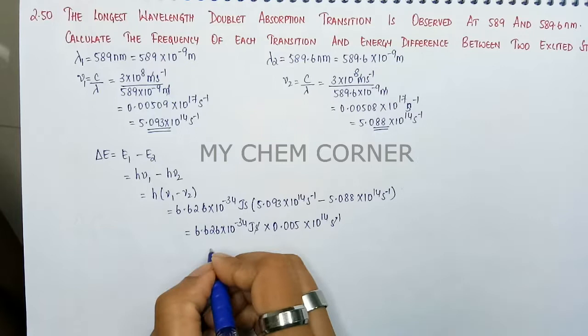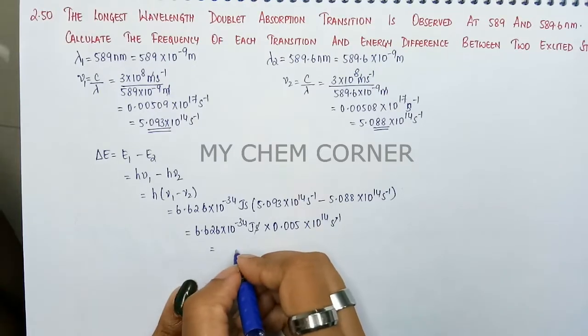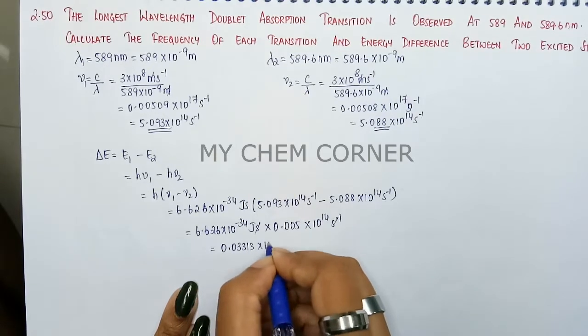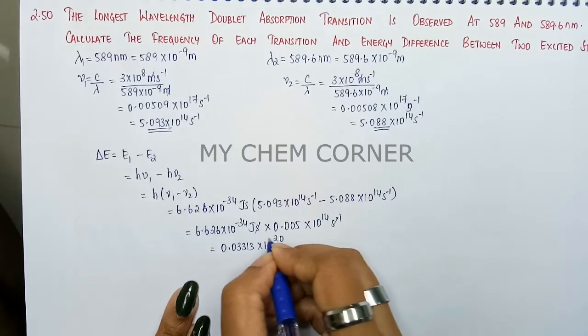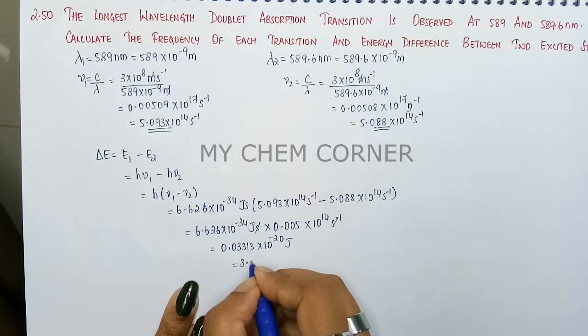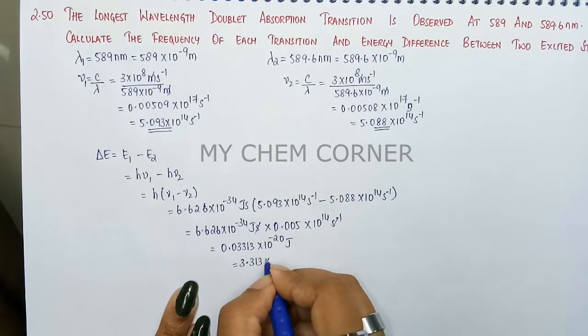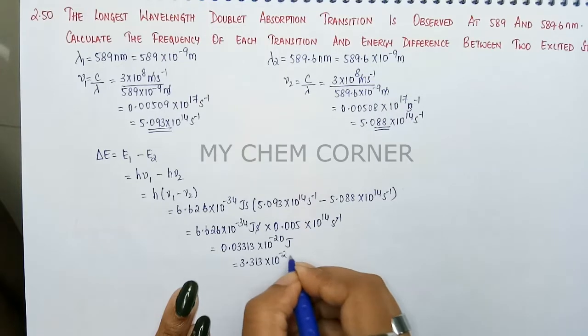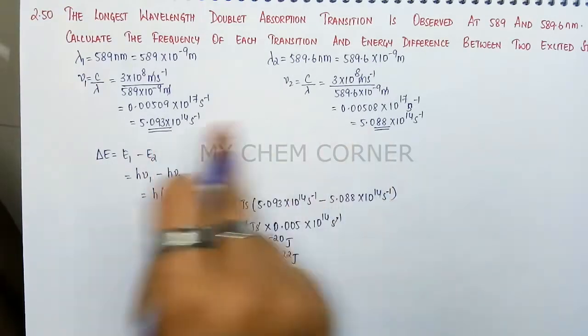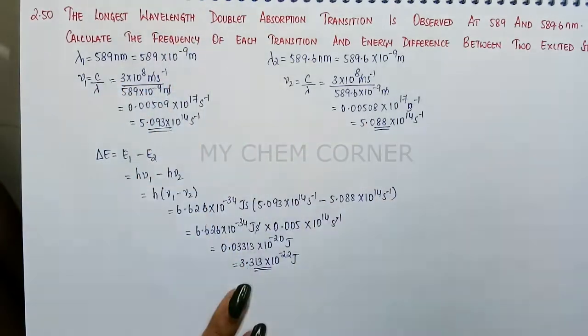Seconds inverse and seconds will get cancelled. When you multiply both you will get 0.03313 into 10 to the power minus 20 joule. Shift your decimal you will get 3.313 into 10 to the power minus 22 joules. This is the energy difference and these two are the frequencies for each transition.